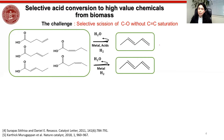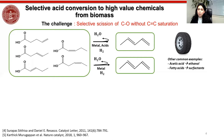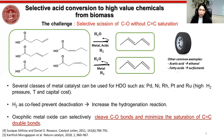These compounds are very important for the production of different types of polymers — for example, butadiene can be used as a monomer for the production of synthetic rubber. Similar chemistry can be applied for the conversion of acetic acid to ethanol. So as mentioned, we are going to study the conversion of carboxylic acid to aldehyde via decarbonylation reaction.